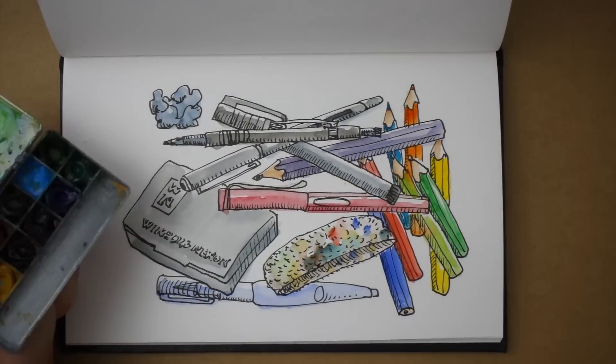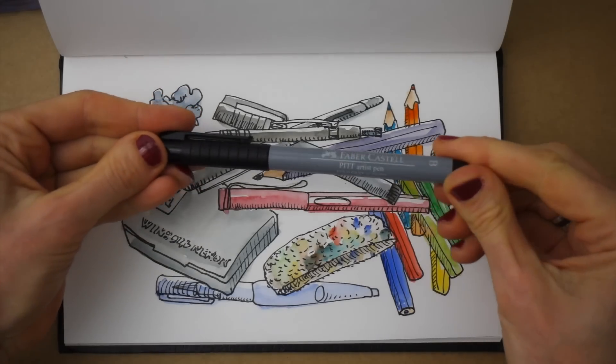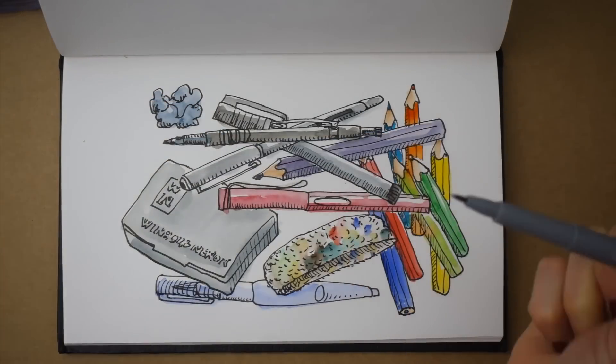Once the paint has dried, I get back in with my gray brush marker to add a little bit of depth by adding drop shadows.